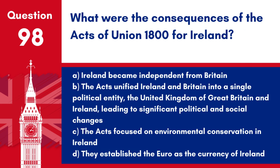Question 98: What were the consequences of the Acts of Union 1800 for Ireland? a. Ireland became independent from Britain. b. The Acts unified Ireland and Britain into a single political entity, the United Kingdom of Great Britain and Ireland, leading to significant political and social changes. c. The Acts focused on environmental conservation in Ireland. d. They established the euro as the currency of Ireland. Answer: b. The Acts of Union 1800 had lasting implications for the relationship between Ireland and Britain.